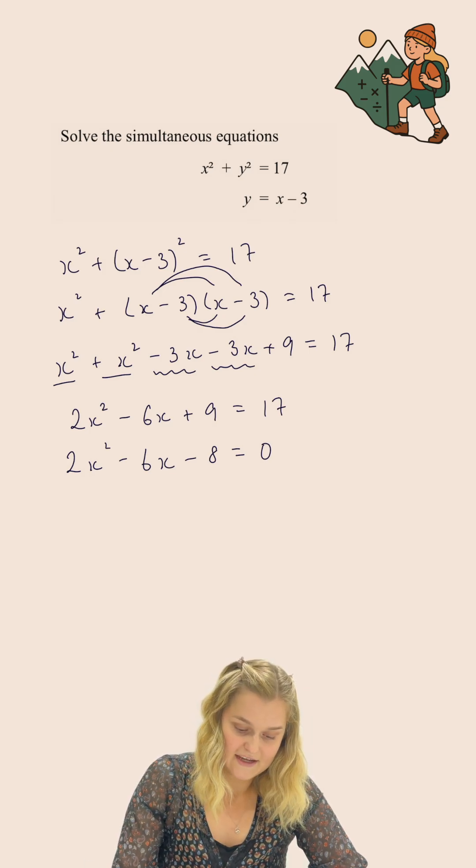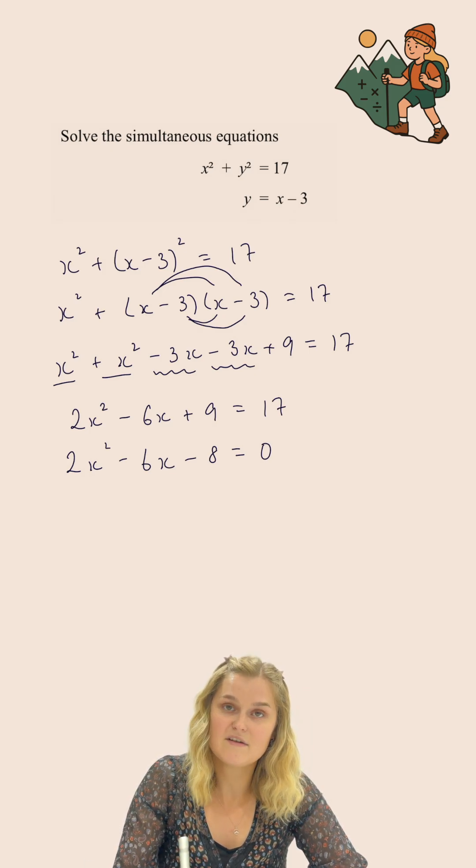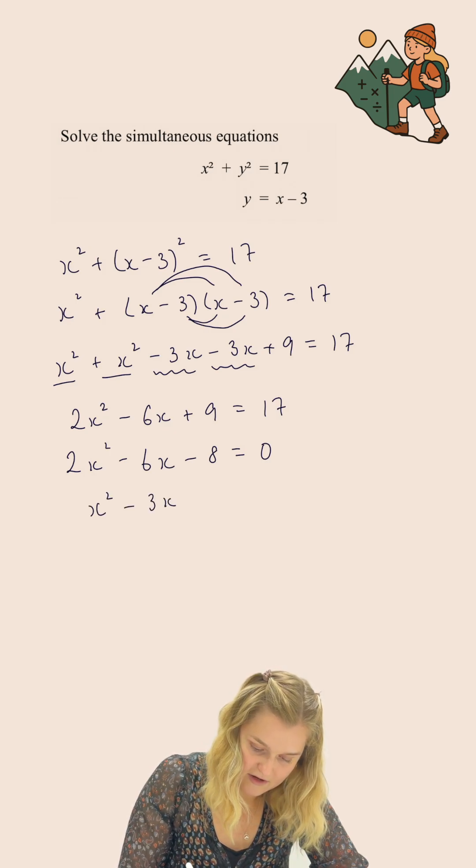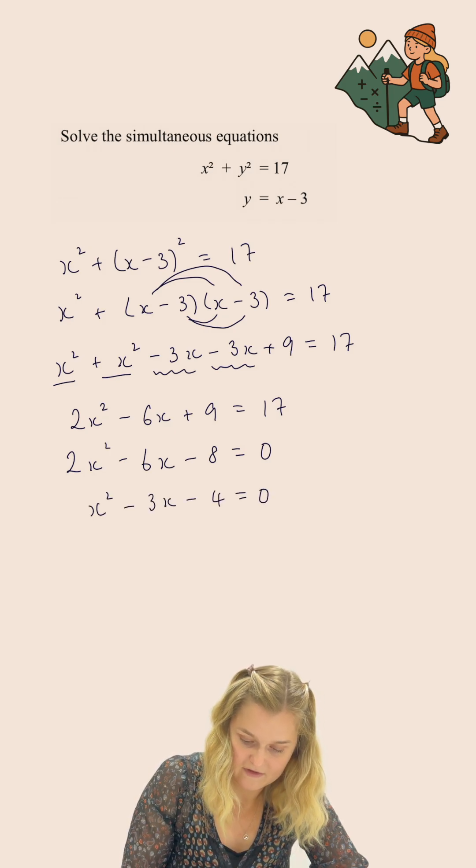Everything in this equation is divisible by 2. So I'm going to divide everything by 2 to give me x squared, subtract 3x, subtract 4, equals 0.